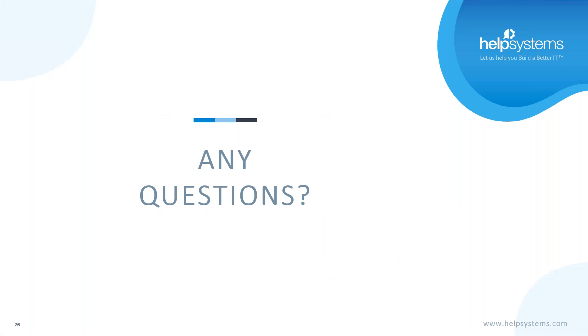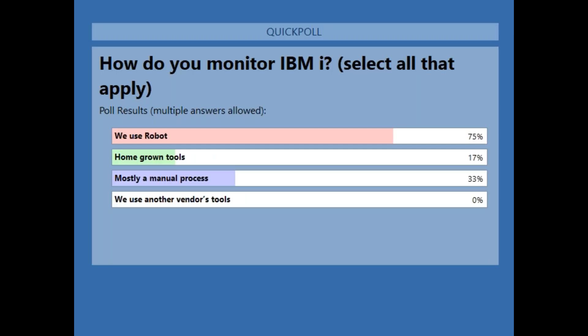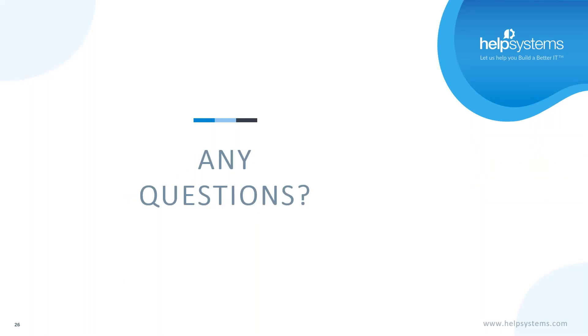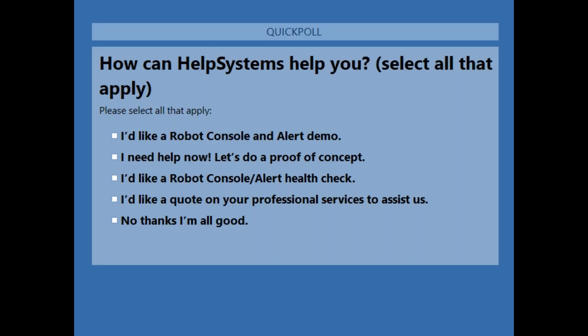We'd love to talk to you more about Robot Network and using Robot Console with it. Let's bring up our follow-up question: how can we help you? Maybe you'd like a Robot Console Alert demo, or need help right now. We can do a proof of concept, or a Console Alert health check — if any of you would like us to spend an hour with you to talk about how you're using Robot Console, checking if it's being cleaned up and doing everything it could be, we can do that totally free.